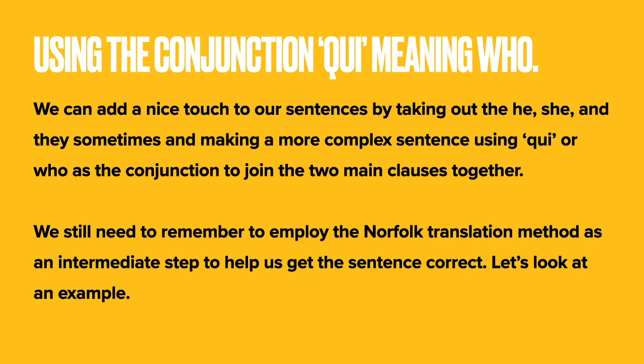Now we can actually make more complex sentences by taking out the 'he' and 'she' and joining two parts of a sentence together. So we can say 'there is a boy — he is eating an ice cream', or we could say 'there is a boy who is eating an ice cream', or as we put it into the Norfolk Translation Method: 'there is a boy who eat an ice cream'. We're going to look at how we join two main clauses together using the conjunction 'qui', meaning 'who', still using the translation method to make sure we don't have any extra 'is's' and 'are's' in our written work.